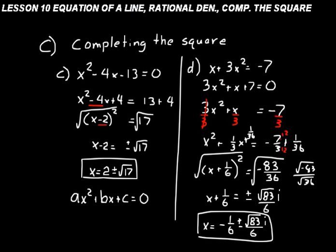To summarize the completing the square process: first get the equation in standard quadratic form ax squared plus bx plus c equals 0. Make sure the x squared coefficient equals 1. Get the x terms by themselves on the left. Take half the x coefficient, square it, and add it to both sides. On the left you'll have a squared binomial; take the square root of both sides and solve for x, remembering to include the sign.